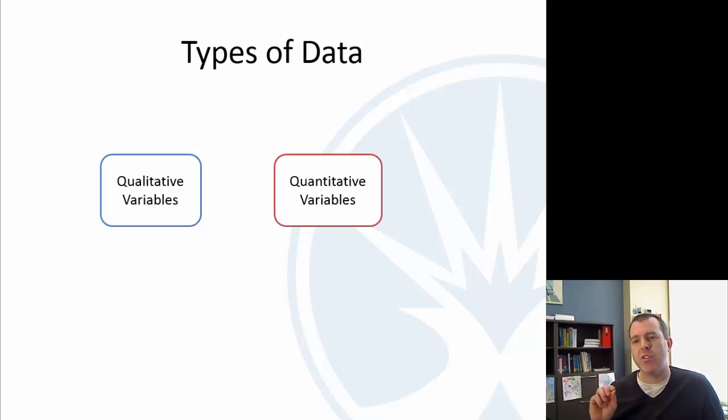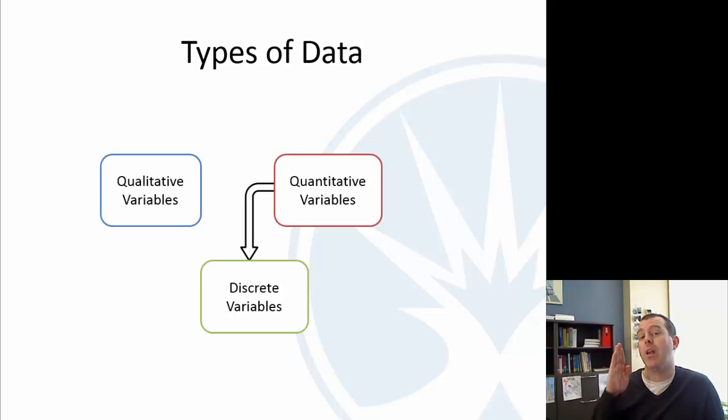Within quantitative, we have two general categories. We have discrete variables, which are essentially variables that you can count. One, two, three, four, etc. You can have halves and quarters. That's fine.